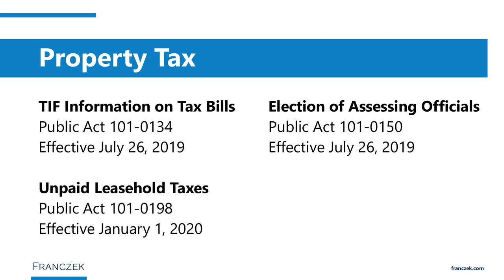A second property tax bill addresses school districts that own property leased to individuals who must pay property taxes. Public Act 101-198 affects property in a county with more than 800,000 and fewer than one million inhabitants. In such counties, if the lessee fails to pay property taxes, the county treasurer will notify the taxing district and the state's attorney can bring a lawsuit against the lessee compelling them to pay.